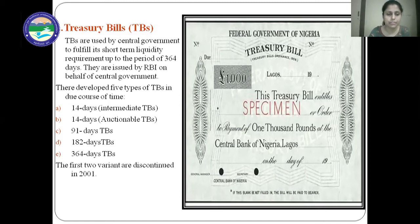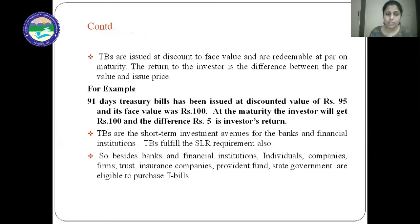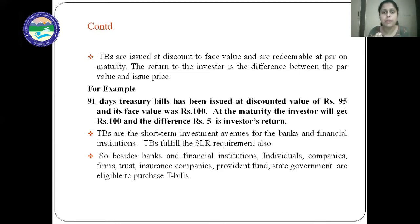The first two variants — the 14-day intermediate treasury bill and the 14-day optionable treasury bill — were discontinued in 2001 and are not available now. Treasury bills are issued at a discount to face value and are redeemable at par on maturity. The return to the investor is the difference between the par value and the issue price. For example, a 91-day treasury bill issued at a discounted value of rupees 95 with a face value of 100 — on maturity after 91 days, the investor will get rupees 100. The difference of five rupees is the investor's return.